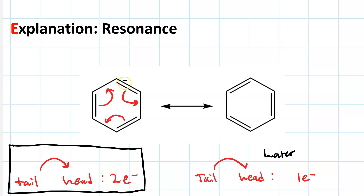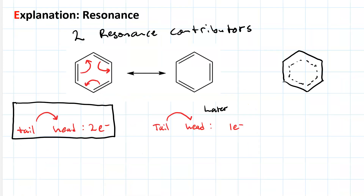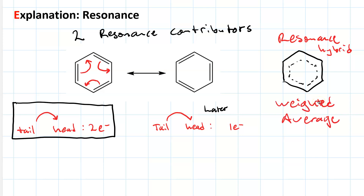This doesn't mean that the electrons are actively moving. What it means is that the structure of the molecule is the average of these two resonance contributors. The resonance hybrid represents the bonding in actuality, and it is the weighted average of the important resonance contributors. Weighted average just means that in some cases, one resonance contributor will be more important and contribute more to the resonance hybrid than others. In this case, both resonance contributors are equally important.